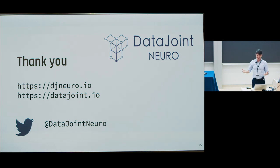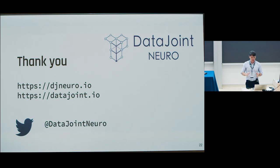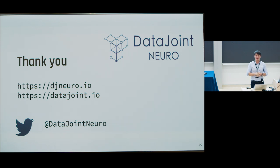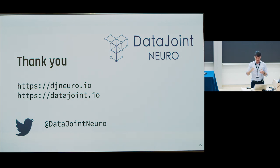In summary, djneuro.io is the company website. We'll be running a demo here — we have a little booth where we can show it. A lot of great things are happening. This is a great time to be both a data scientist and a neuroscientist, and ideally both.